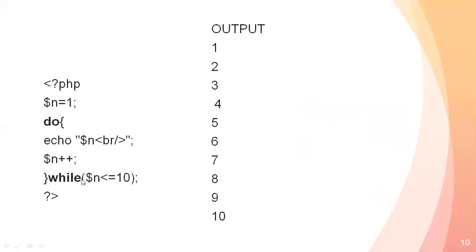The condition will be checked afterwards. Here I am assigning the value $n equals to 1. The do block begins and we write our echo statement.